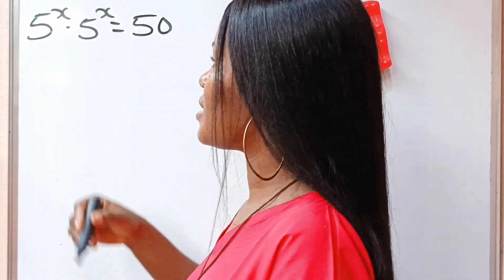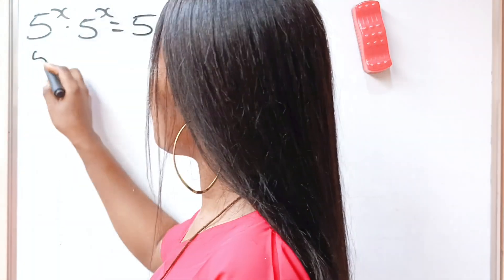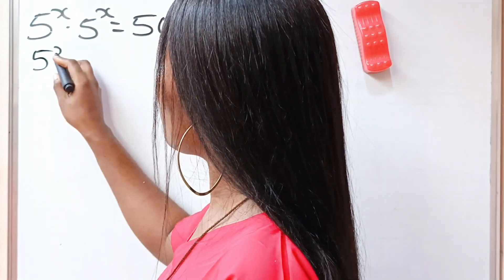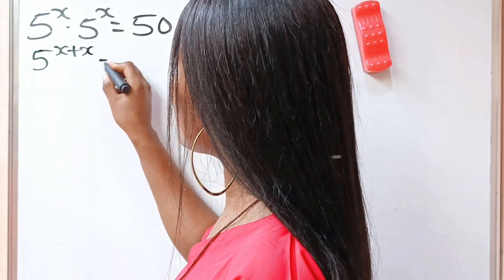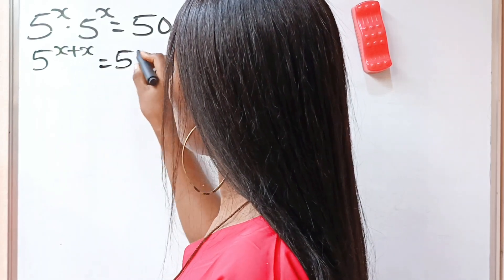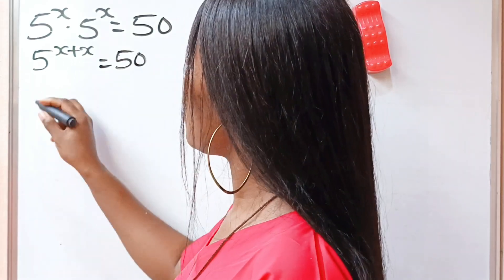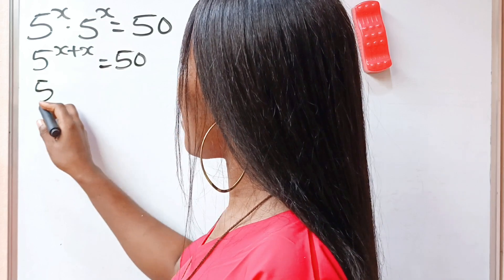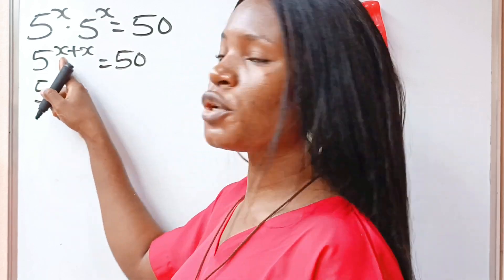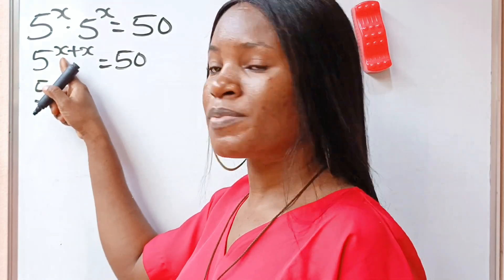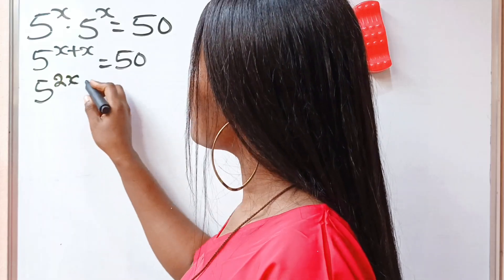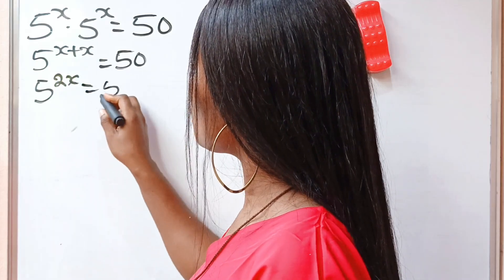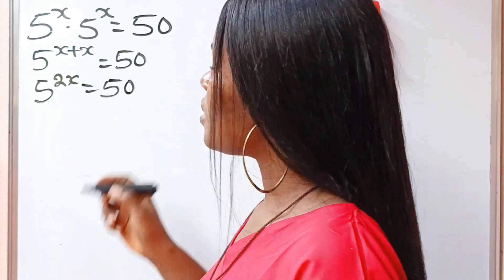So if we look at that, we are going to pick one base, which is 5, and we add the powers: x plus x is equal to 50. So we have 5 to the power of x plus x, which is 2x, is equal to 50.